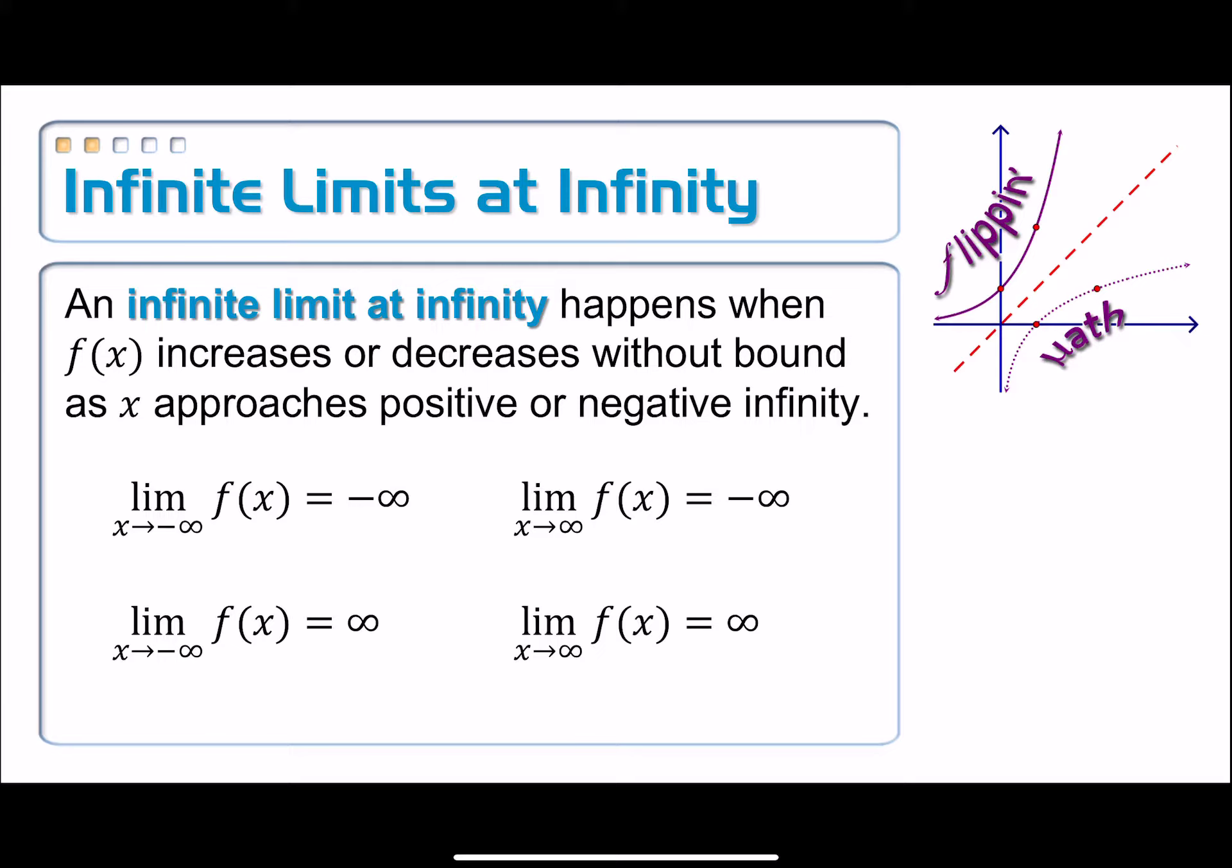All right. So here, a summary of some infinite limits at infinity. This is usually referring to some kind of end behavior here. It happens when f of x increases or decreases without bound as x gets closer and closer to positive or negative infinity. And we have these four specific cases. And as I just mentioned, that is referring to the end behavior of the graph.